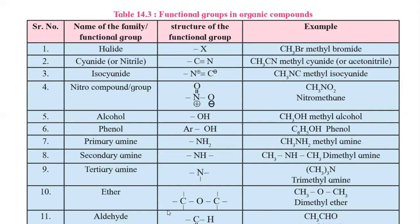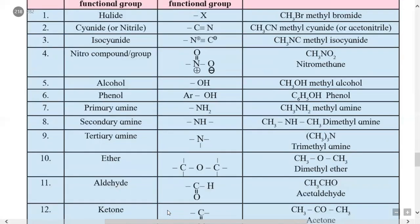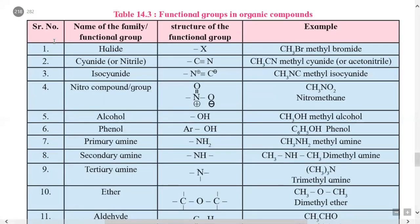We will study these 23 types one by one in detail from table 14.3. This table contains the 23 types of organic compounds. The first column is the name of the family or the functional group, then the structure of the functional group, and then an example.